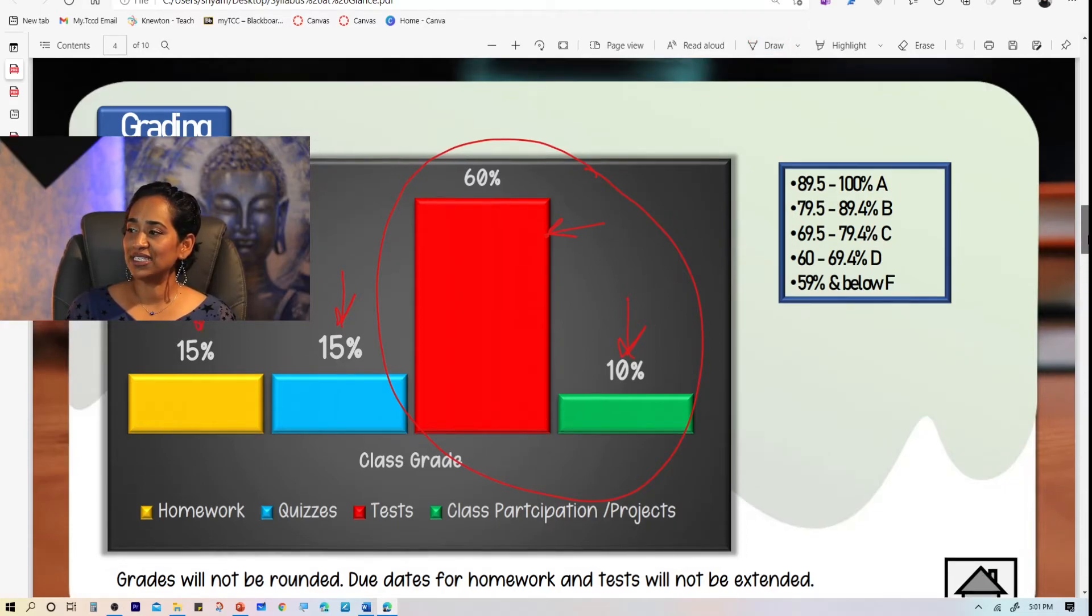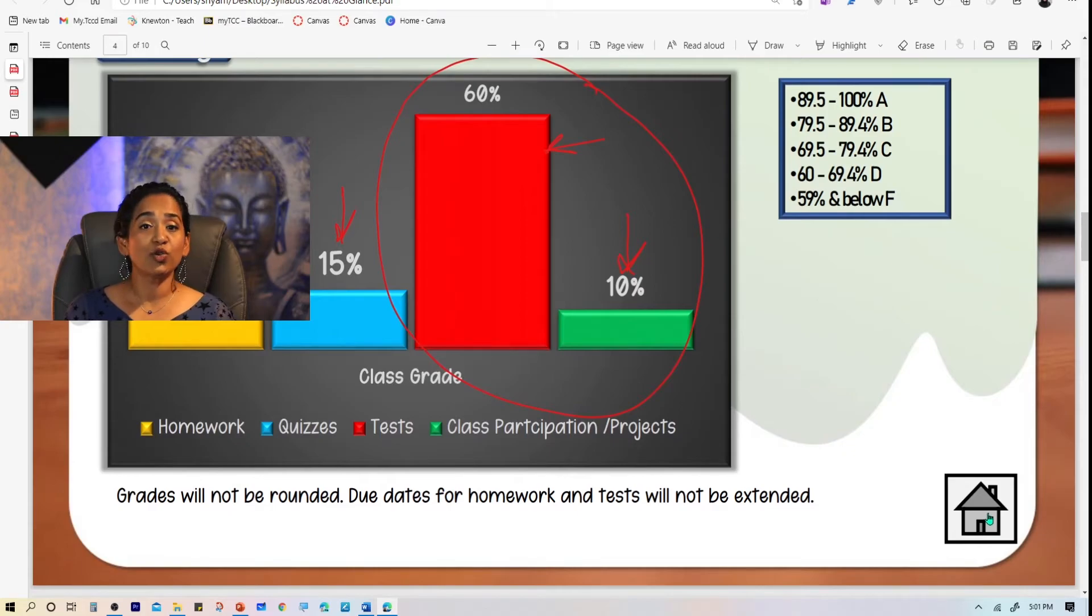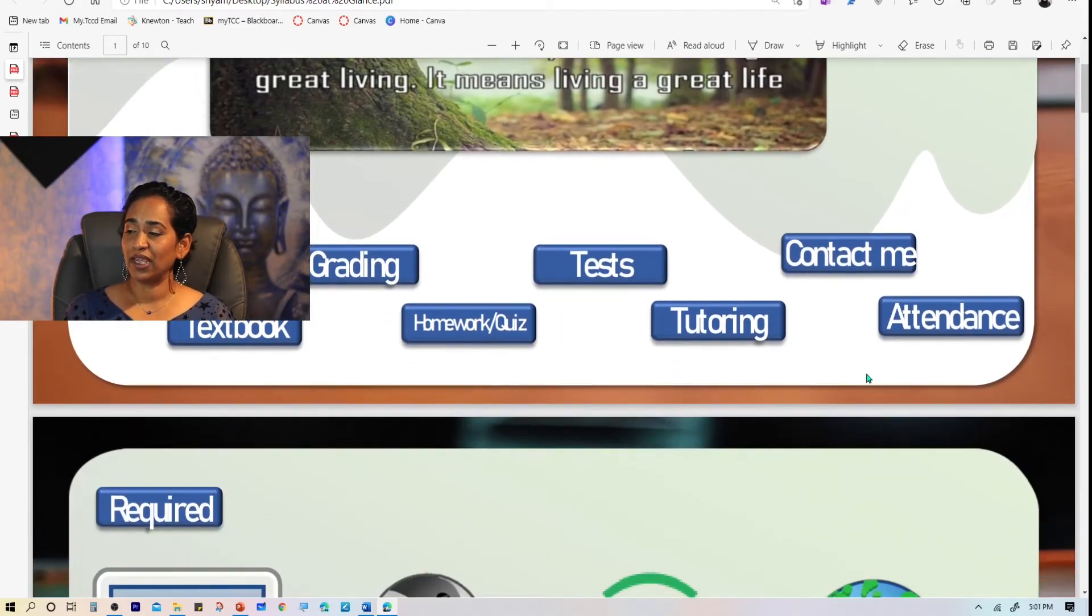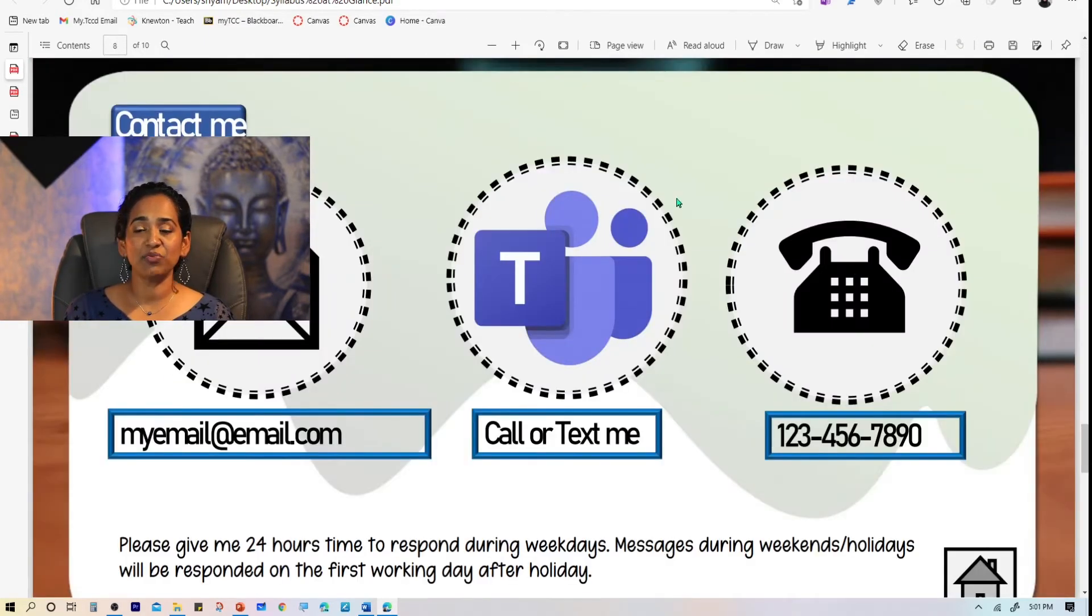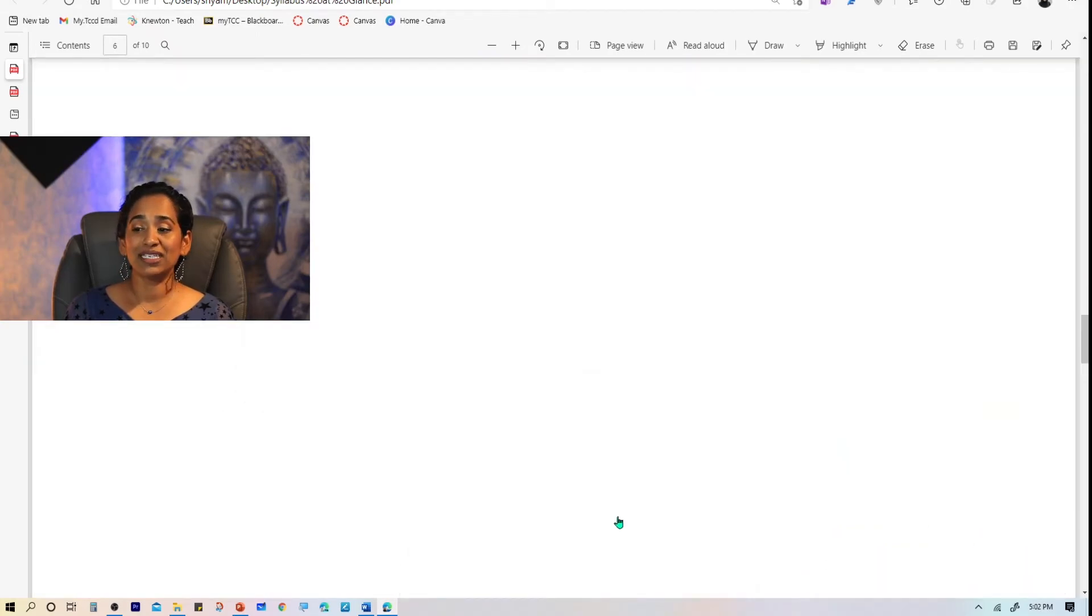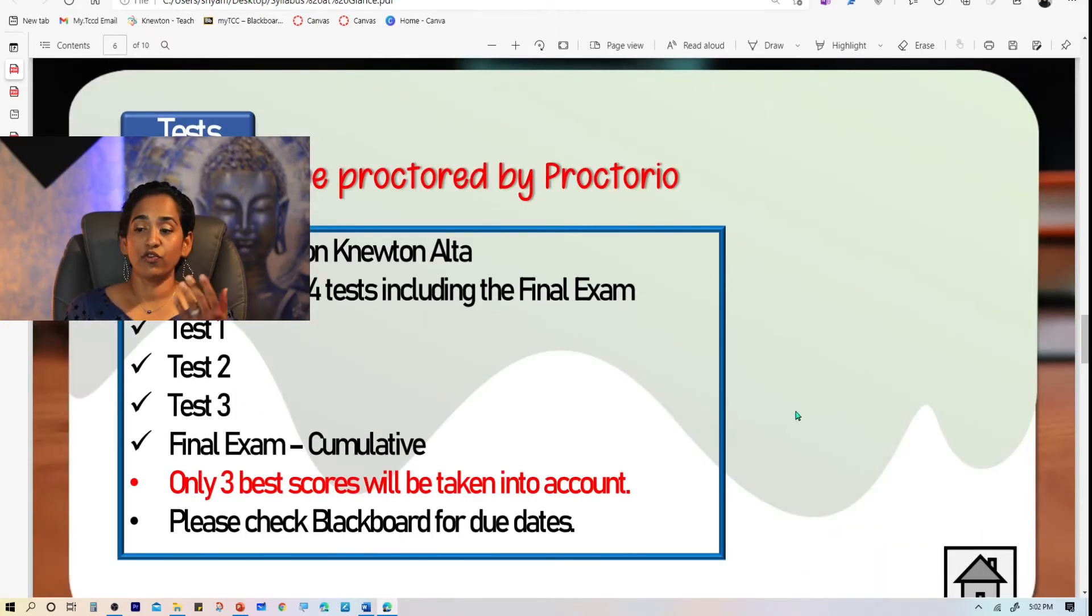And here I'm using this little home tab to go back to my home screen. In here, I'm going to click on contact me. Here is my contact information. Click on the home button again right here. And I'm going to click on tests. There are four tests, five tests, how many tests you have.